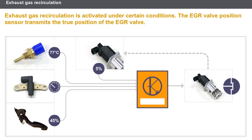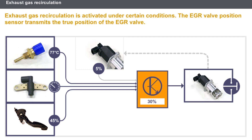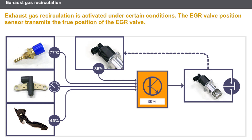The conditions generally required to enable exhaust gas recirculation are: a warm engine, engine at an average speed, and the accelerator pedal position at an average load. Depending on the various parameters, the computer determines the required rate of recirculation and controls the EGR valve. The EGR valve position sensor transmits the true position of the valve, allowing the computer to adjust the valve control.